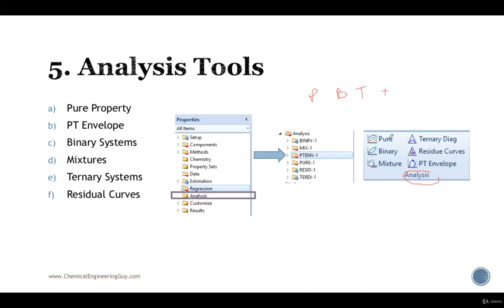So if you use only one substance, you will be able to use pure and PT envelope for that substance. If you have binary, you can use the pure substance of each component, the binary interaction of those, the mixture, and PT envelope. If you have three substances, you will be able to use all of them because you can interact between them separately via binary. You can use mixtures, and I would say the most important part will be the ternary diagram.